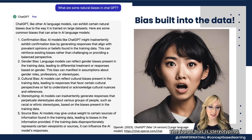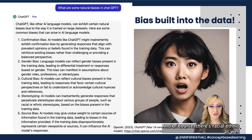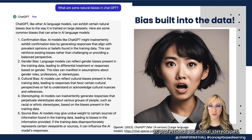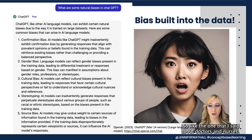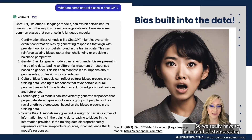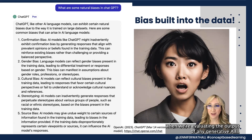The fourth bias is stereotyping. There are racial, ethnic, as well as professional and vocational stereotypes — like the example I mentioned about doctors and nurses. We really have to be careful of stereotyping when evaluating the output of any generative AI.